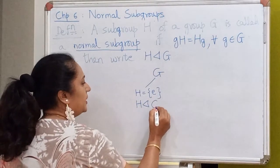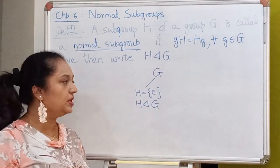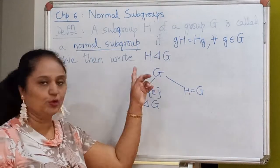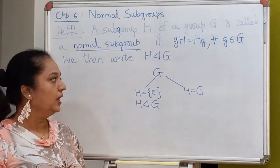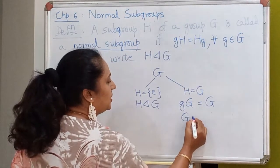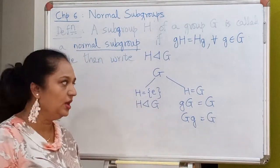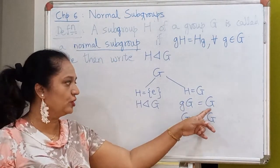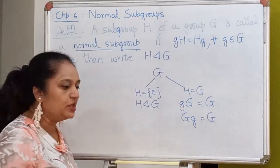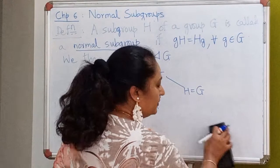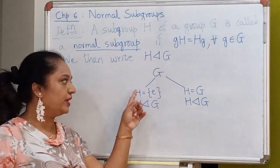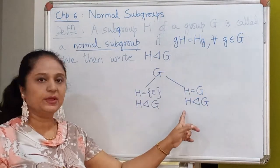If H is the trivial subgroup, we have proved it is a normal subgroup of G. On the other hand, take the improper subgroup H which is the whole group G. Because all elements lie inside G, the left coset gG equals G and the right coset also equals G. So the left and right cosets are equal for all elements, meaning the improper subgroup is also a normal subgroup of G.